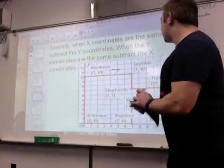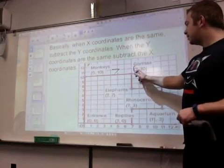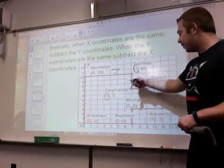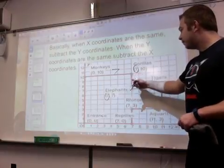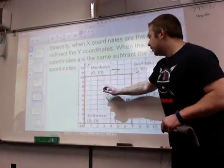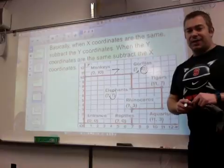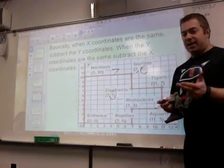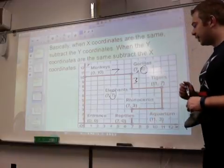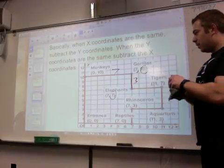I'll do one more point on here. I'll do from the gorillas to the elephants. I see that the X's are both the same. They're both at 7. They're both right here on this line at 7. The difference is within the Y's, 7 and 10. So what's the difference between 7 and 10? 7, 8, 9, 10. Only 3. So that's why that distance is just 3. Now I could have counted as well. 1, 2, 3.